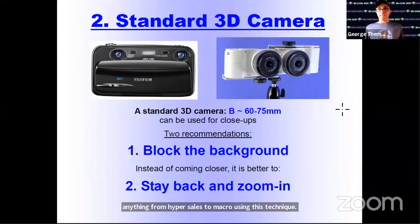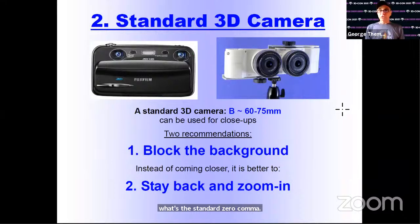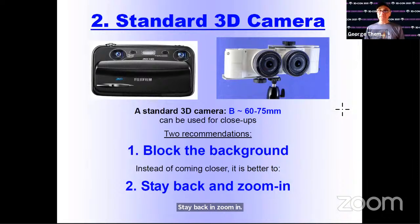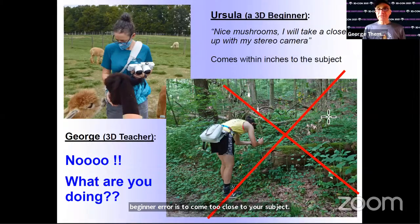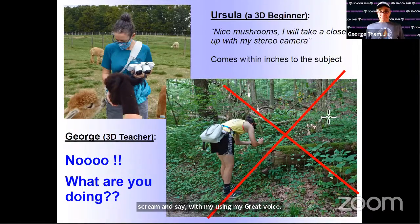Method number two: you can use a standard stereo camera for close-ups. A standard stereo camera has lens spacing between 60 and 75 millimeters. You can use it for close-ups, but I give two recommendations: first, block the background; second, instead of coming closer, stay back and zoom in. It's the distance that does the damage. One typical beginner error is to come too close to your subject. Occasionally I see my friend Ursula coming uncomfortably close to something with her stereo camera, and I have to say, using my Greek voice — no, what are you doing?